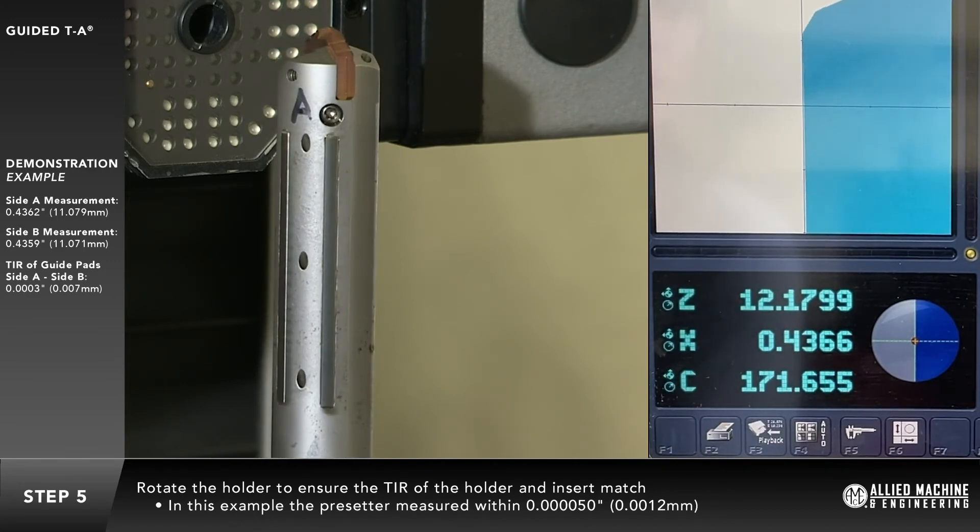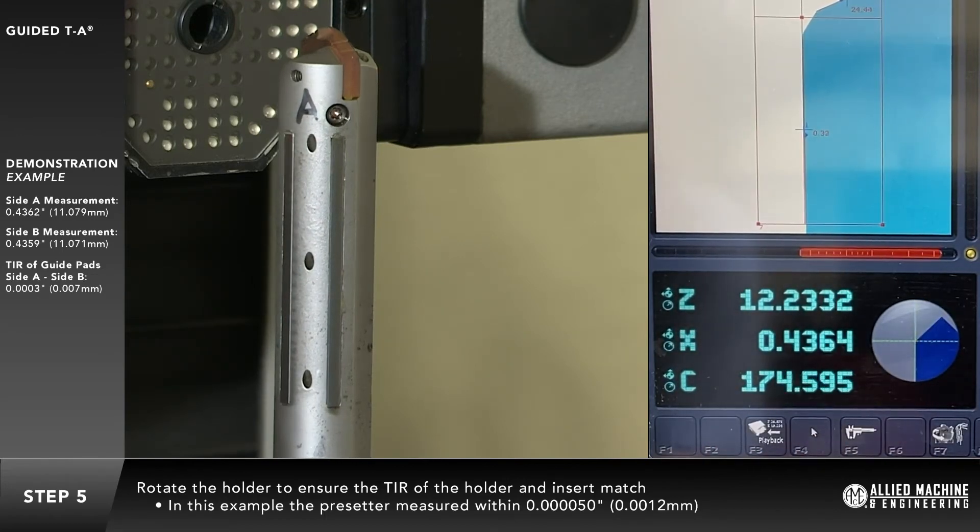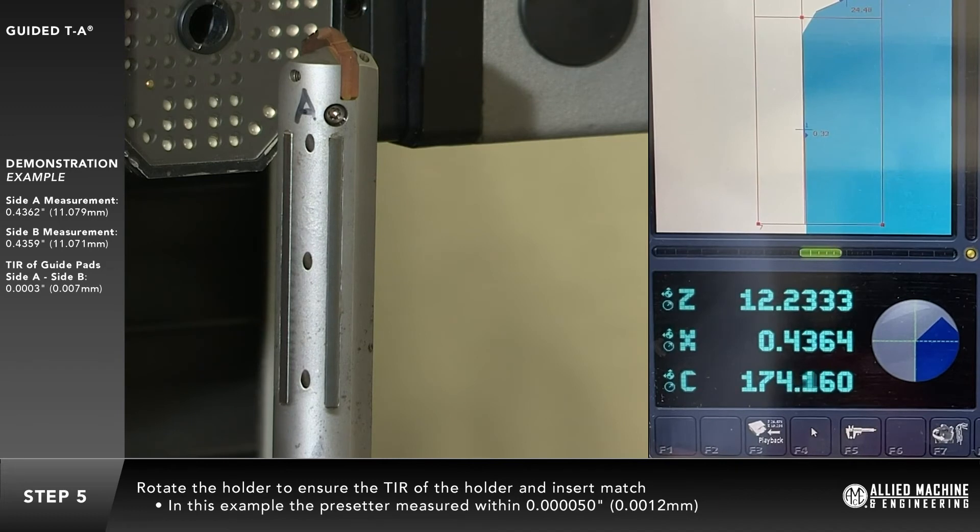Rotate the holder to ensure the TIR of the holder and the insert match. In this example, the pre-setter measured within 50 millionths of an inch, in metric 0.0012 millimeters.